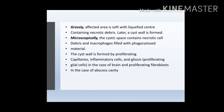A cystic wall is formed, just like a blister. The cystic space contains necrotic cell debris, microfibers, and macrophages filled with phagocytic material. The cell wall is formed by proliferation of capillaries, inflammatory cells, and gliosis — gliosis being a glial response of the brain — or fibroblasts in the case of an abscess cavity. The hallmark is central liquefaction, with dead cells, macrophages, and phagocytic material surrounding it, giving a cyst-like structure.